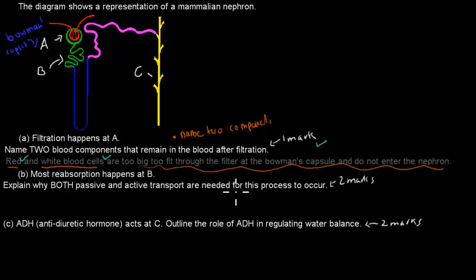B: most reabsorption happens at B. Explain why both passive and active transport are needed for this process to occur. The actual verb itself is explain, so we need to give it a bit more detail obviously, and we need to know why exactly we need to have both of these.